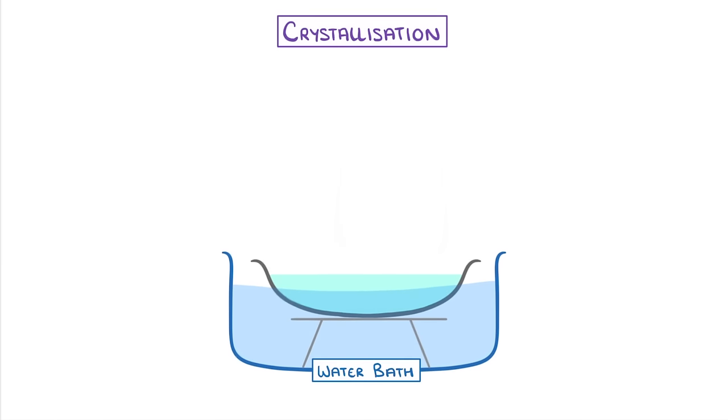The first step is still to place our solution into an evaporating dish and heat it, but this time we need to heat it more gently. So we might use a water bath instead of a Bunsen burner.